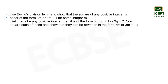Hello students. Here we are with question 4 of exercise 1.1 for the chapter Real Numbers. The question is: use Euclid's Division Lemma to show that the square of any positive integer is either of the form 3m or 3m plus 1 for some integer m. The hint provided is: let x be any positive integer, then it is of the form 3q, 3q+1, or 3q+2. Square each of these and show that they can be rewritten in the form 3m or 3m+1.